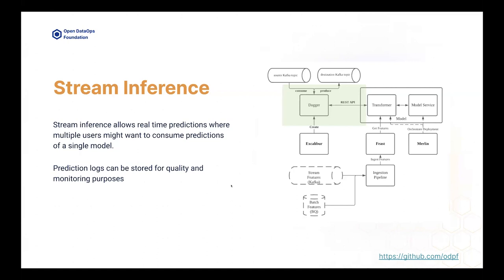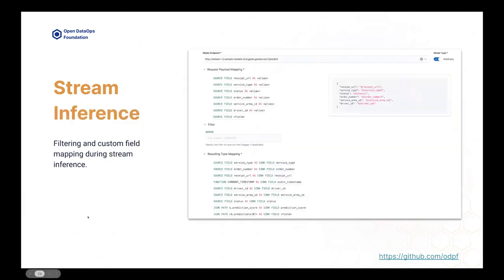Use cases include: a booking event comes in, you attach a pricing prediction immediately, call your pricing model, attach the price, and send that output right away — multiple consumers can then use that. All prediction logs are in Kafka and can be stored into BigQuery or other warehouses for monitoring, quality, auditing, or whatever purpose. Stream inference is also very self-service from the data scientist's point of view: people specify the request payload mapping, their filter query, and the resulting type mapping — how they want the prediction output to look — simply defined on the UI.